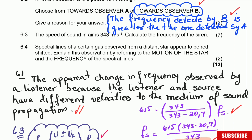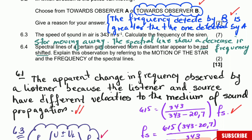Question 6.4: Spectral lines of a certain gas observed from a distant star appear to be red-shifted. Explain this observation by referring to the motion of the star and the frequency of the spectral lines. If it is red-shifted, it means the star is moving away from us. We know this because the spectral lines show a decrease in frequency, which is a shift towards the red end of the spectrum. Note: the star itself doesn't look red — it is the spectral lines that shift towards the red.